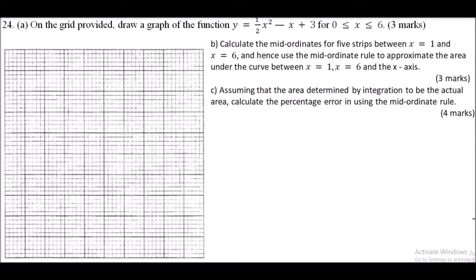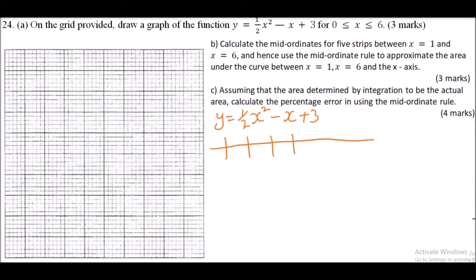Question 24 part a: we are told on the grid provided, draw a graph of y = ½x² - x + 3 for 0 ≤ x ≤ 6, and you get 3 marks. Our function is y = ½x² - x + 3. Because of space I will not expand my table — I'll just have two rows for x and y. We have x values: 0, 1, 2, 3, 4, 5, and 6.